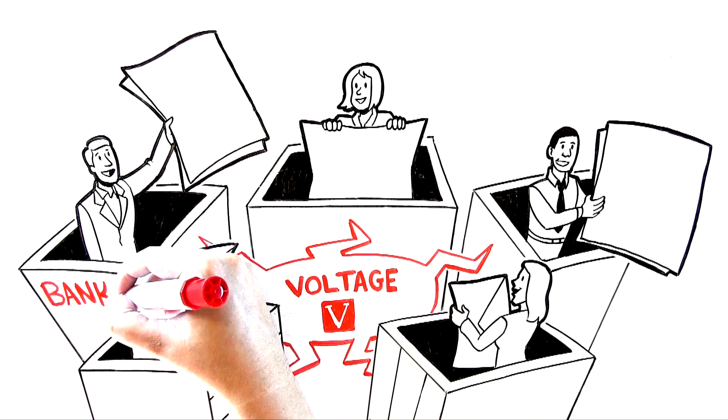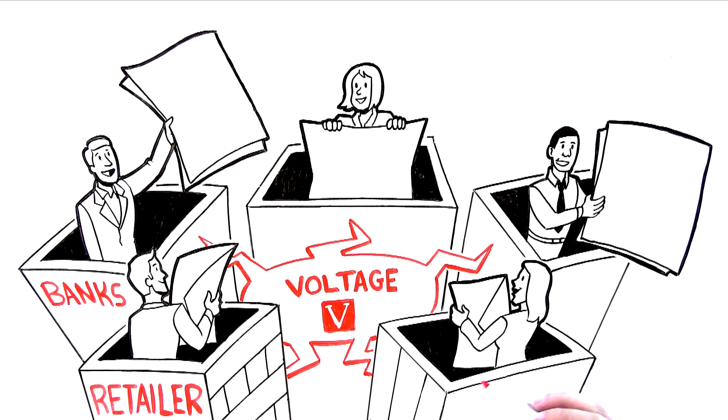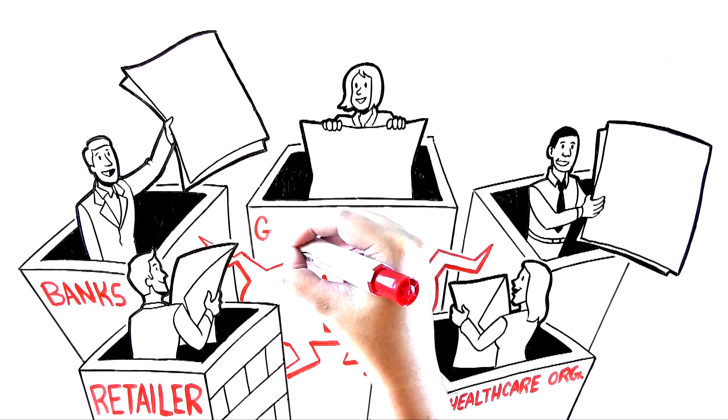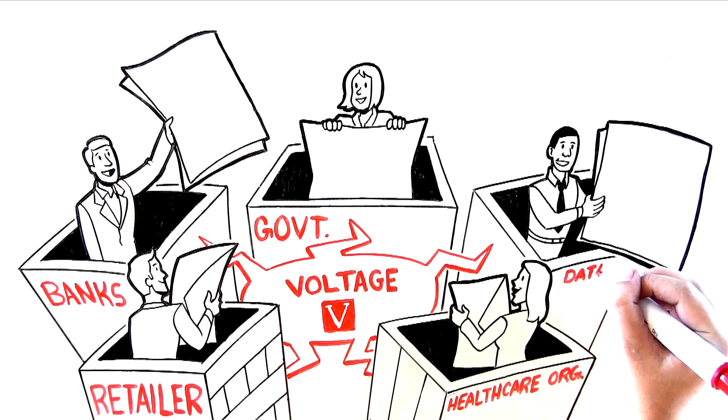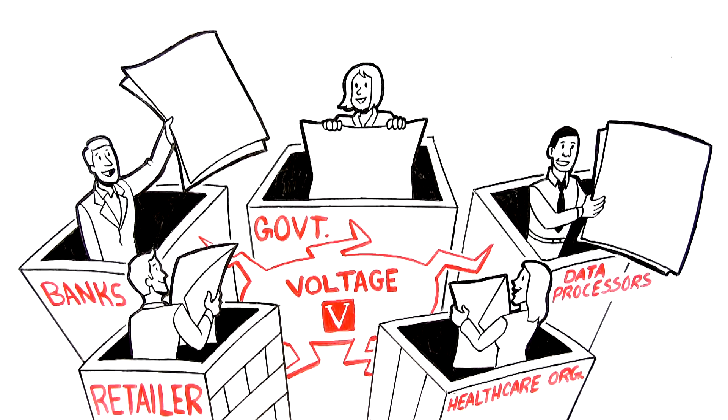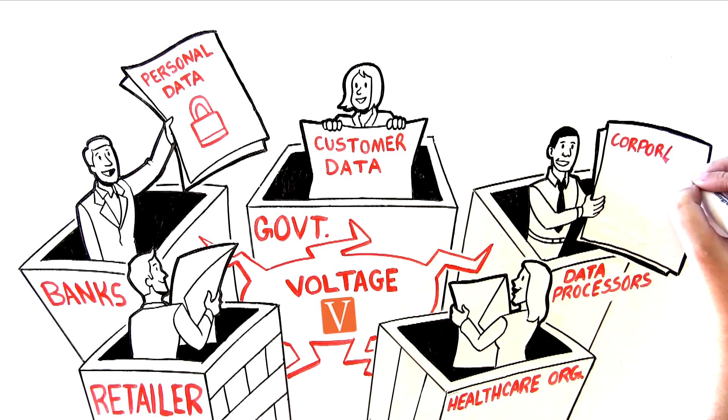Voltage Secure Mail avoids the complicated key management and key storage required by traditional email encryption solutions. Instead of users having to manage keys, exchange secret information or use cumbersome certificates, the whole key management process is automatic and transparent.